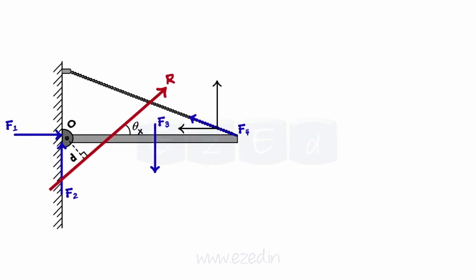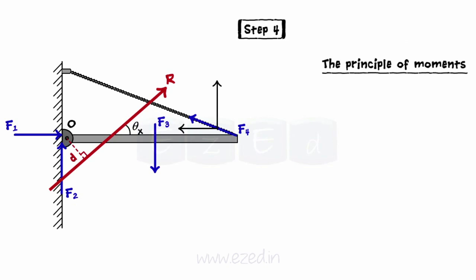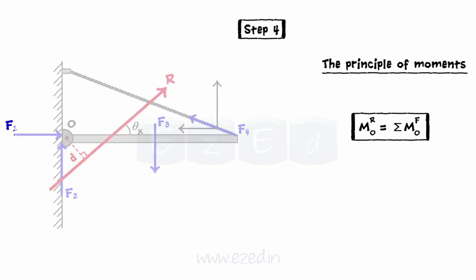The position of the resultant can be found by using the principle of moments, that is, by using the formula: moment of resultant about any point is equivalent to the summation of the moments of all the forces about the same point. Thus, we can completely define the resultant of a general force system.